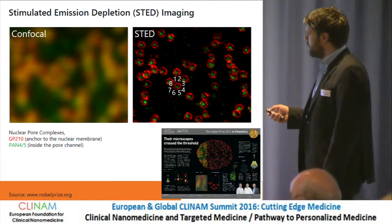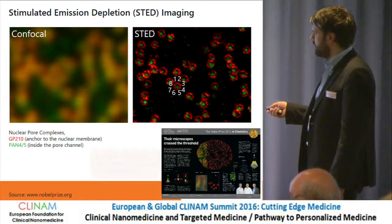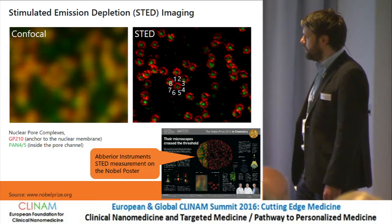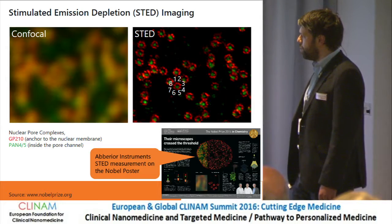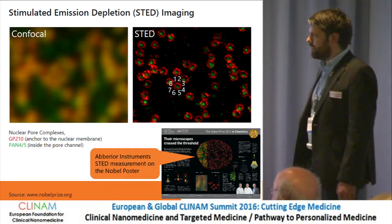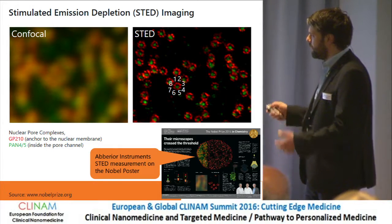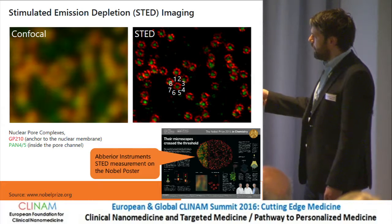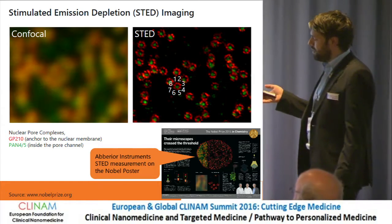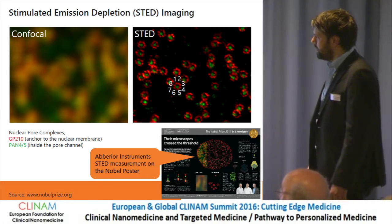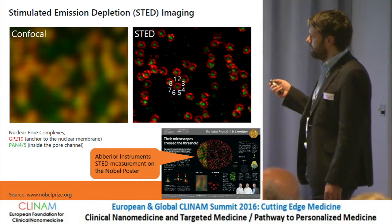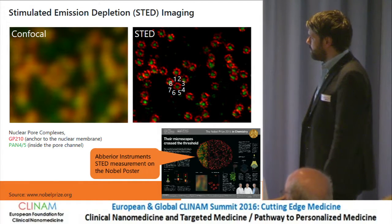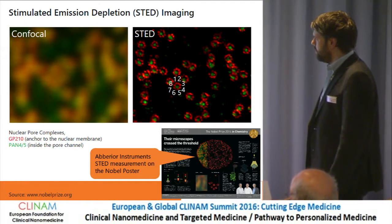Also, as Stefan told you, the actual picture on the Nobel Prize poster is done with an Abberior Instruments machine. So we hope we are not only close to great research performance, but we are really at the cutting edge, at least resolution-wise. Once more, on the left-hand side, you can see nuclear pore complexes, and on the right-hand side you can see that the anchor has this eight-fold symmetry and you can nicely resolve much more details.